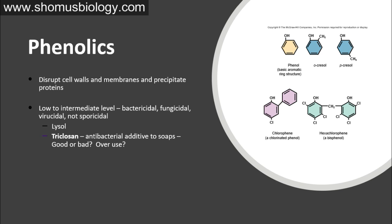Phenolics disrupt cell walls and membranes and precipitate proteins present in microbes. They have low to intermediate level of activity. They are bactericidal, fungicidal, and virucidal, but not sporicidal — meaning they cannot kill spores but can kill bacteria, fungi, and viruses.